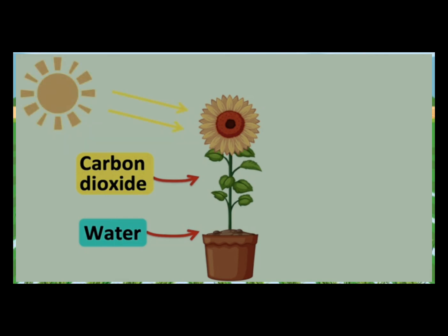Sunlight provides the energy for the process to take place. The chlorophyll in plants can absorb the light energy. The products are oxygen and glucose. Oxygen is released back into the air through the stomata. Glucose is a source of energy for the plant and is transported around the plant by the phloem vessels.